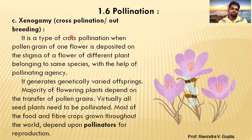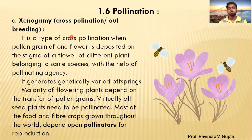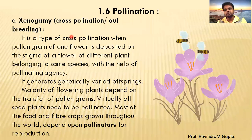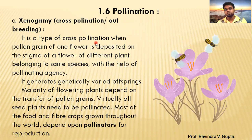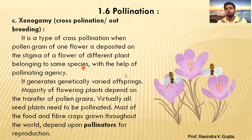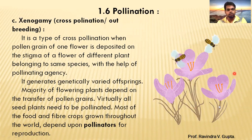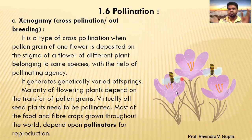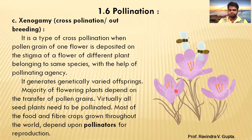Now we will see the third type of pollination. This is a type of cross-pollination. It occurs when a pollen grain of one flower is deposited on the stigma of a flower of a different plant belonging to the same species, with the help of a pollinating agent. You can see in this picture that there are three different plants, but all three belong to the same species.